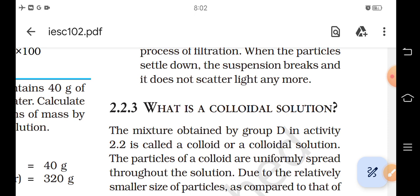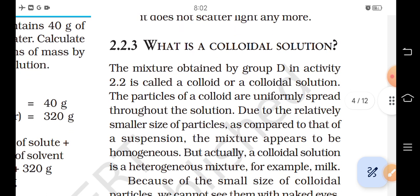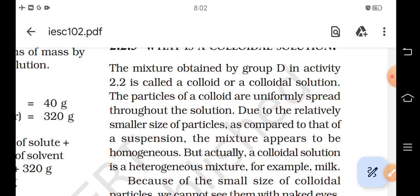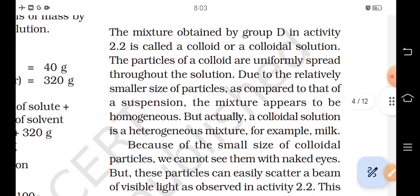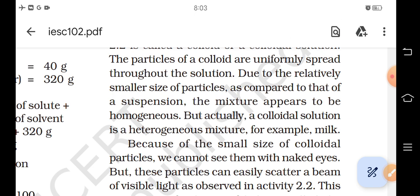2.2.3 What is a colloidal solution? The mixture obtained by group D in activity 2.2 is called a colloid or colloidal solution. The particles of a colloid are uniformly spread throughout the solution. Due to the relatively smaller size of particles as compared to that of a suspension, the mixture appears to be homogeneous. But actually, a colloidal solution is a heterogeneous mixture. For example, milk.